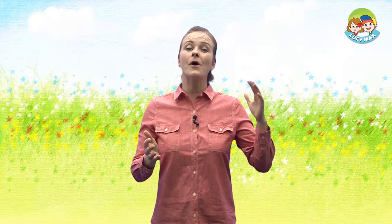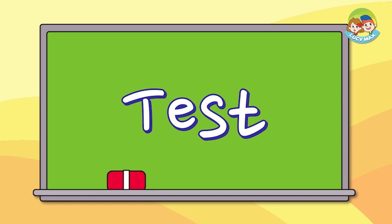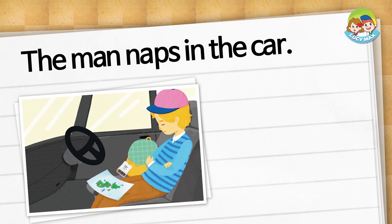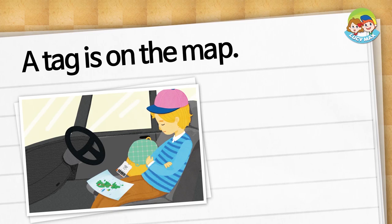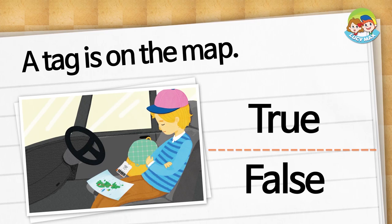Great work! Now you will do a phonics story test — you can choose true or false. The man naps in the car — is it true or false? The answer is true. A tag is on the map — is it true or false? The answer is false. A tag is on the bag.